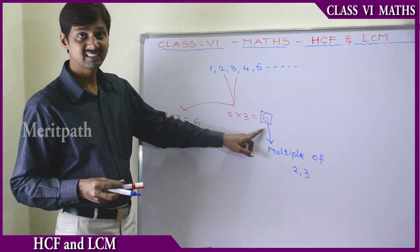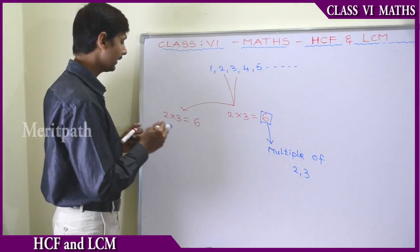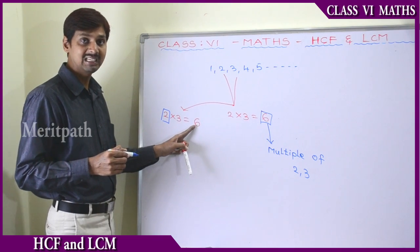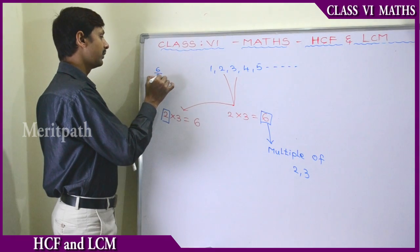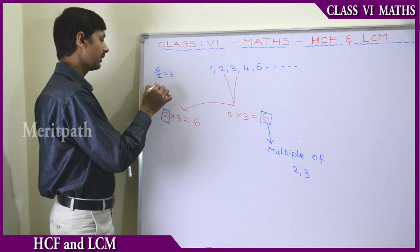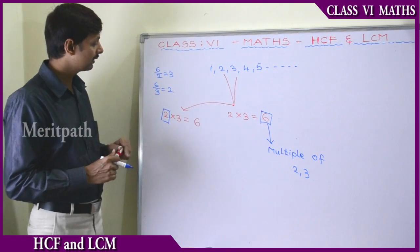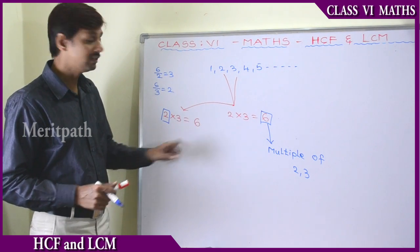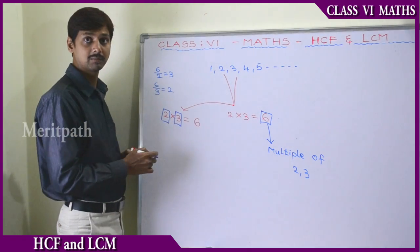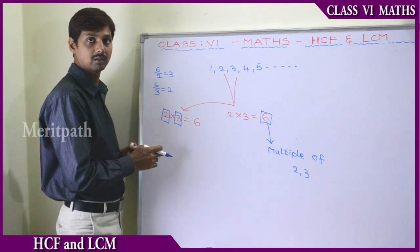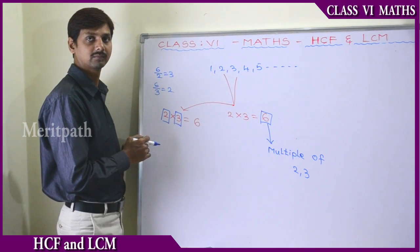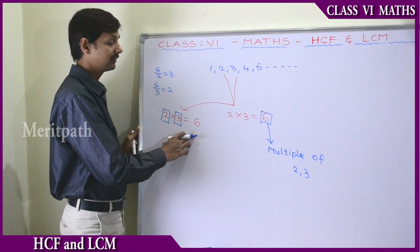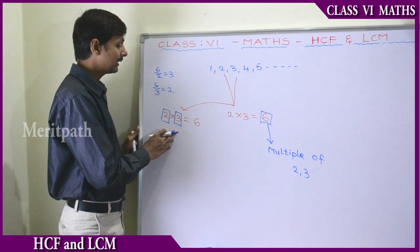Just before, we learnt that 6 is a multiple of 2 and 3. Now let's find out the vice versa. Since 2 divides 6 completely — 6 divided by 2 equals 3 — and 3 also divides 6 completely — 6 divided by 3 equals 2 — both 2 and 3 divide 6 without any remainder. So 2 and 3 are called factors of 6.